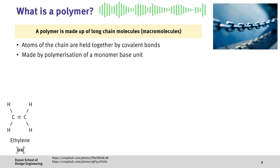These are made by polymerizing a monomer base unit which is our basic building block. Here, we have the example of ethylene which has the chemical formula of C2H4. This basically means it has two carbon atoms and four hydrogen atoms which are held together by covalent bonds.